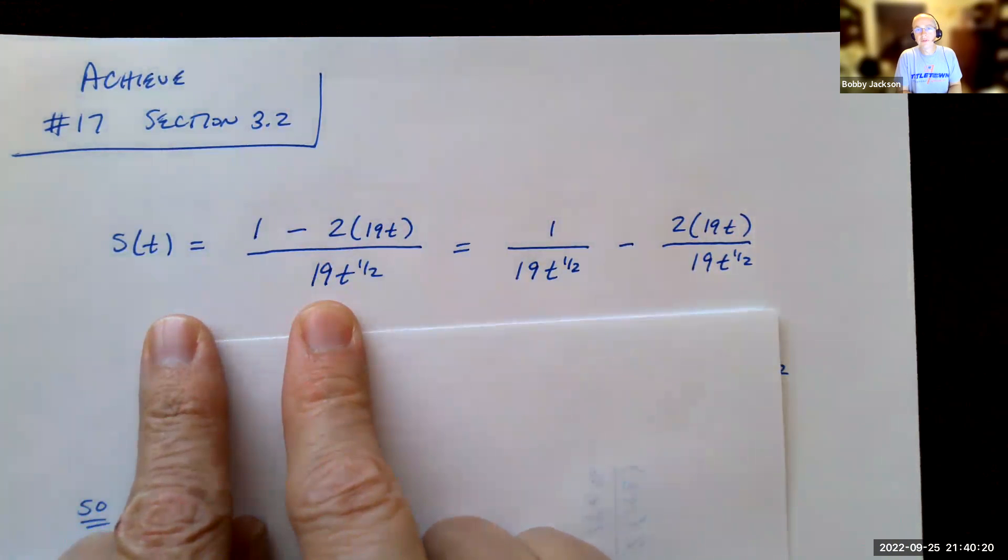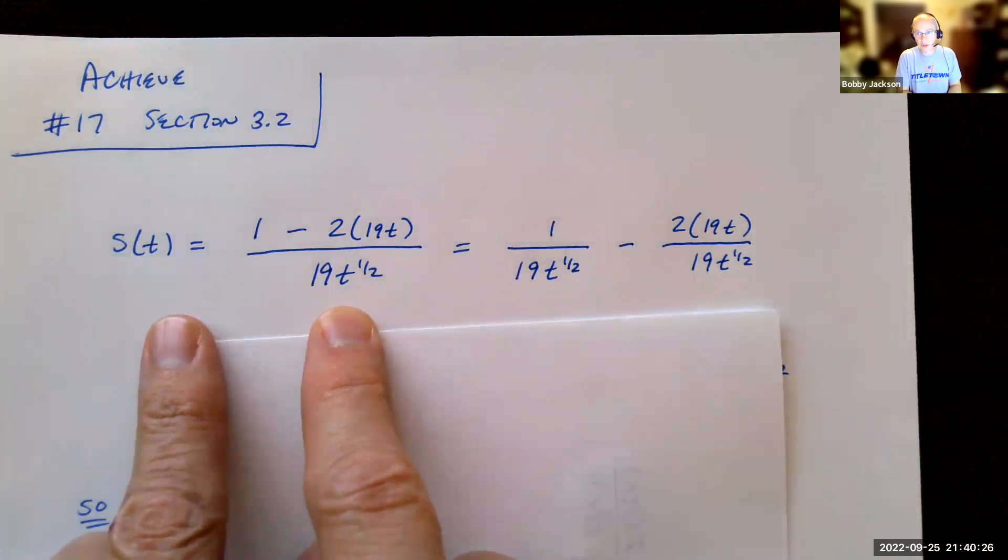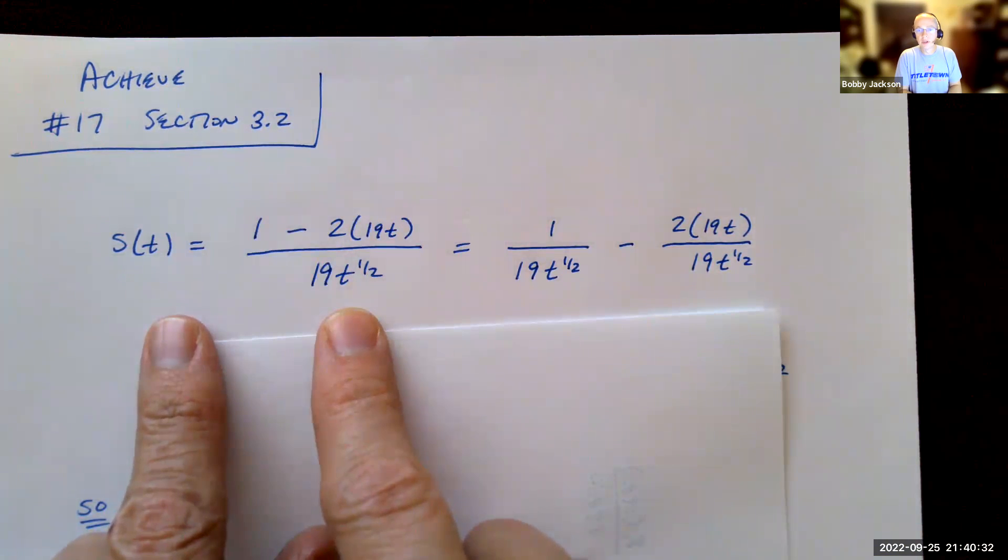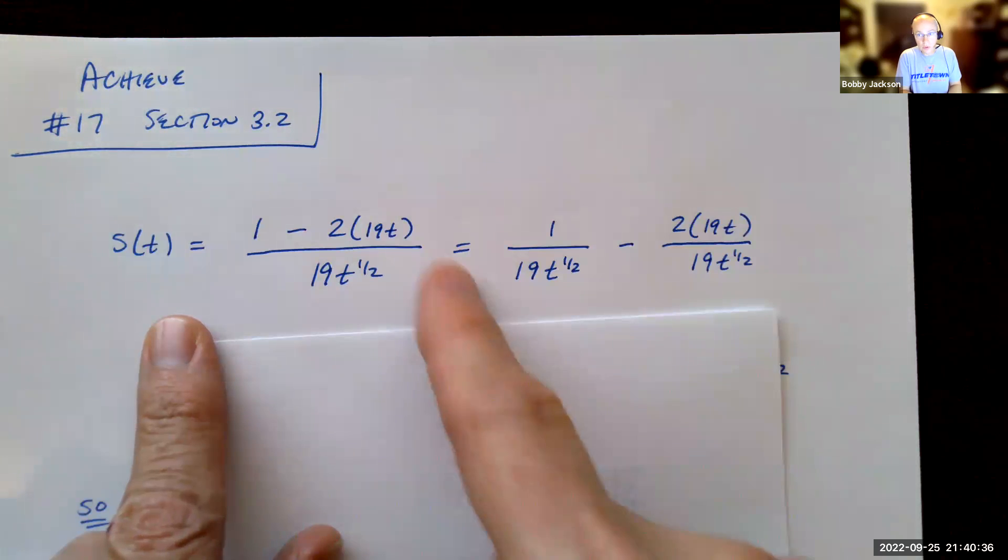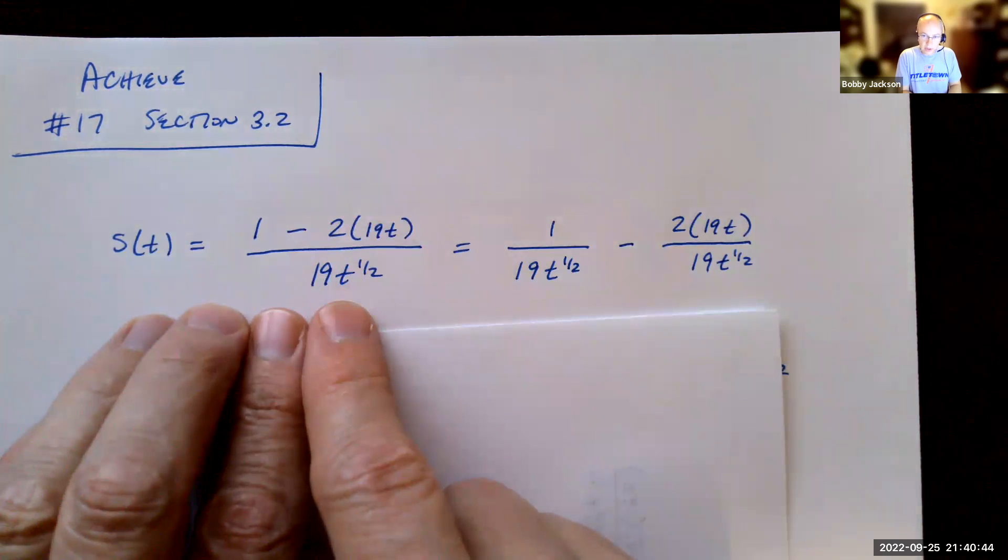They want you to find the derivative of this function. They ask you to do that by expanding or simplifying the function. And we do want to simplify this function right now. Being in section 3.2, this is prior to learning about the product and the quotient rule. So we're not going to use the quotient rule on this one. But we want to simplify this first. And so how can you simplify it?